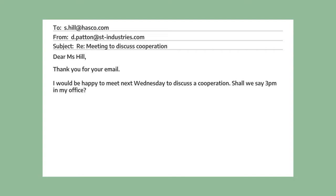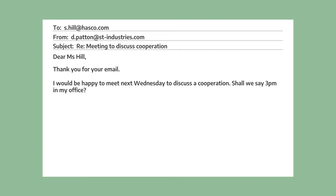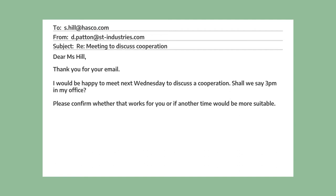Now let's take a look at the second possible response to Susan's original mail. In this response, Mr. Patton does have time on one of the days Susan suggested. Mr. Patton writes, "Dear Ms. Hill, thank you for your email" — again, a friendly and polite way to answer the original mail. "I would be happy to meet next Wednesday to discuss a cooperation. Shall we say 3pm in my office?" So similar to Susan's response, he suggests a time. Then he writes, "Please confirm whether that works for you or if another time would be more suitable" — very polite and friendly, asking for confirmation. And he finishes with "I look forward to meeting you again. Best regards, David Patton."